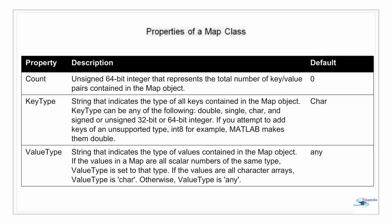A map is a handle object, meaning if we make a copy of a map object, MATLAB does not create a new map — it just creates a new handle for the existing map. So any changes in the new handle will be reflected in the original as well, because this is not a new copy. The new handle can be deleted without affecting the original map.